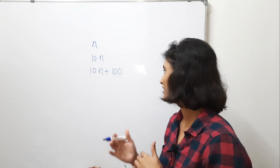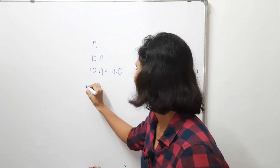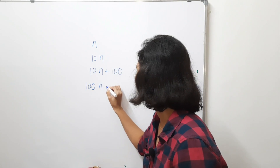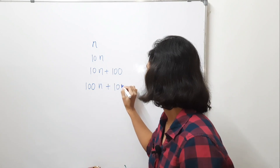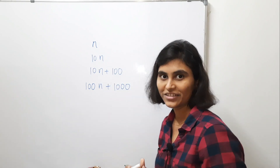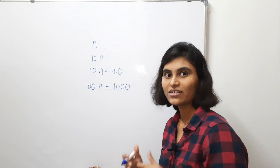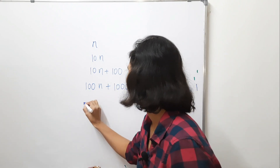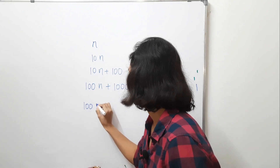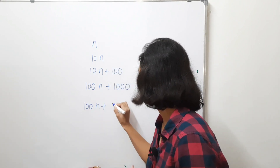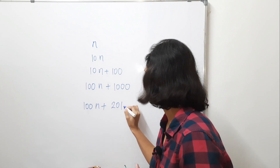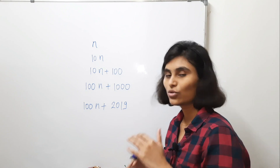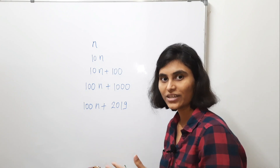In the next step, we multiply by 10, so this becomes 100n + 1000. Now in the next step we add 1019, so this becomes 100n + 2019.